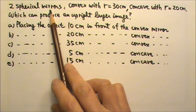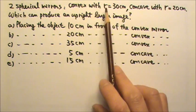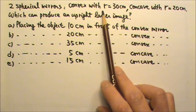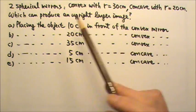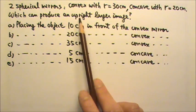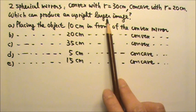A student has two spherical mirrors: a convex mirror with a 30 cm radius of curvature and a concave mirror with a 20 cm radius of curvature. Which of the following can produce an upright image that is larger than the object?